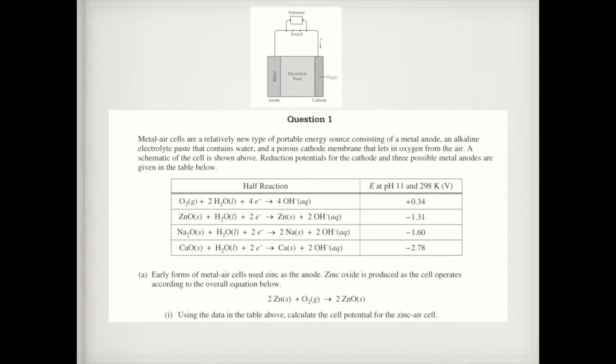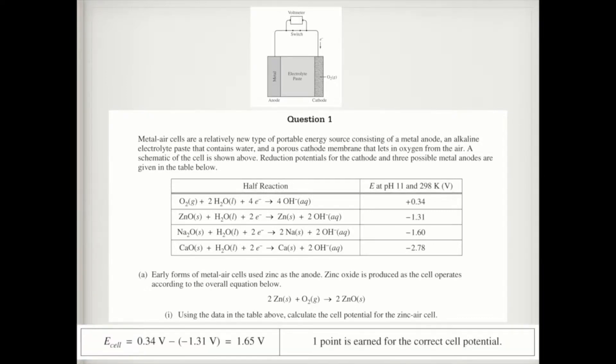So to find the cell potential, I need to take plus 0.34, and then since I need to flip the bottom one, that second reaction, that's going to become positive 1.31. And so all I have to do is add those cell potentials together, and that will give me my answer, which is 1.65.